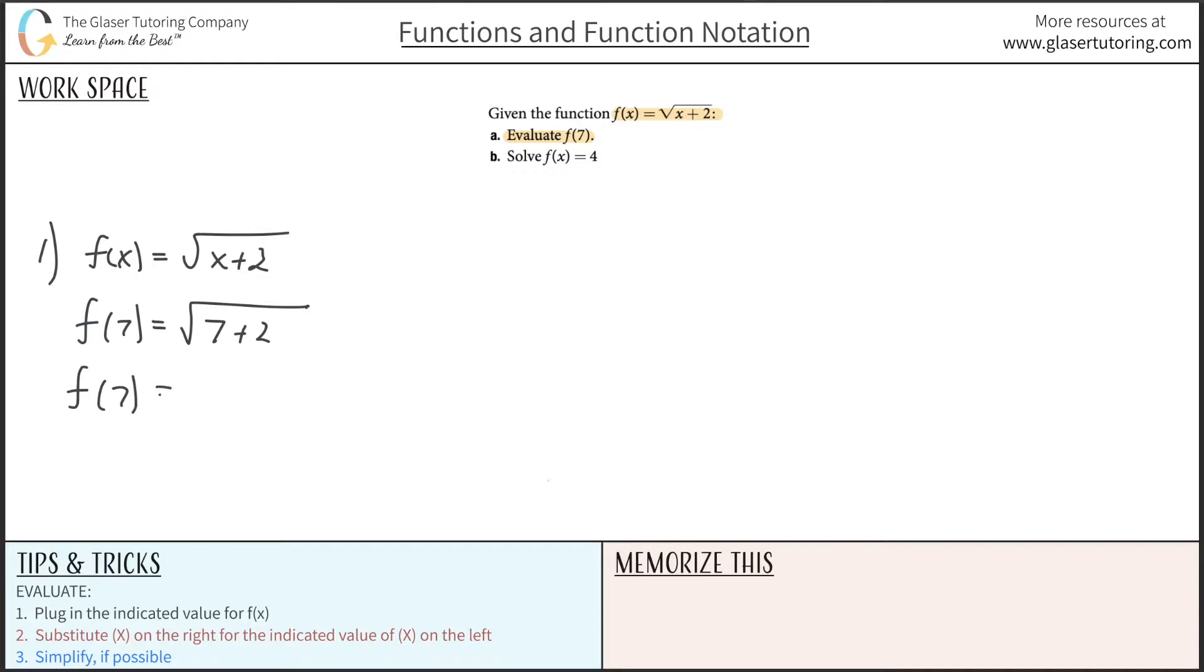So therefore, f of 7 will now equal square root of 9. And this works out lovely because it is... Well, it's not 9. It's 3. So that takes care of that. Let's take a look at the next one.